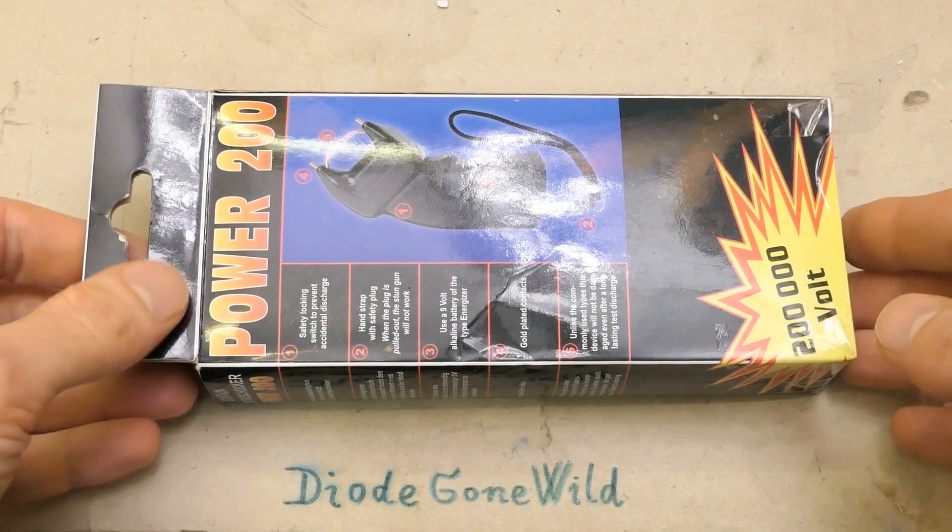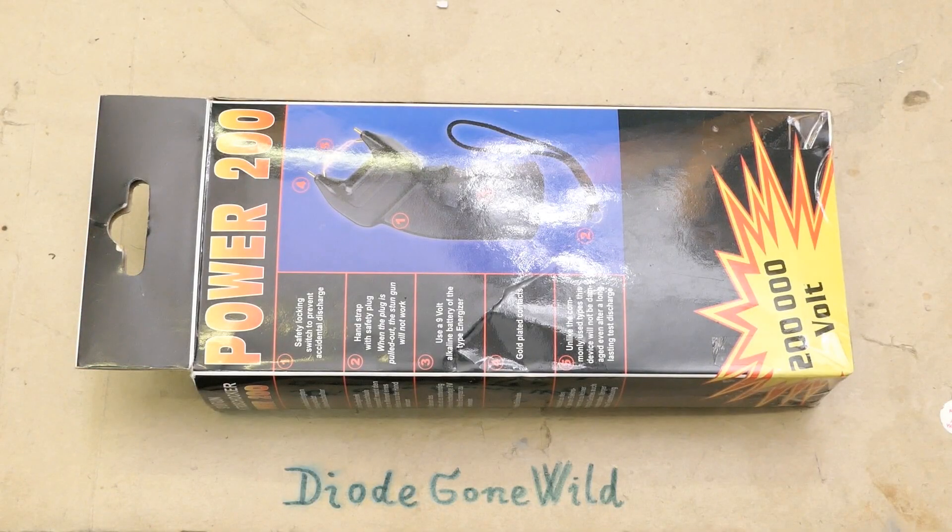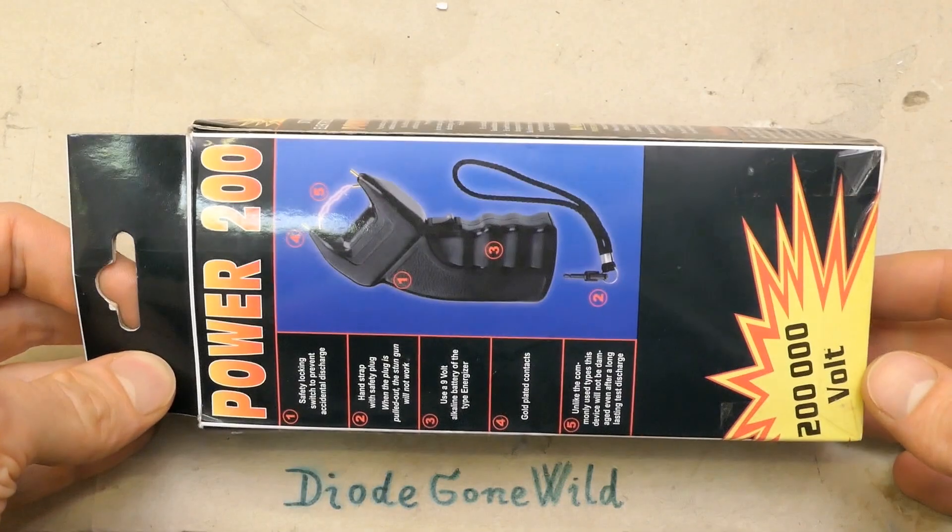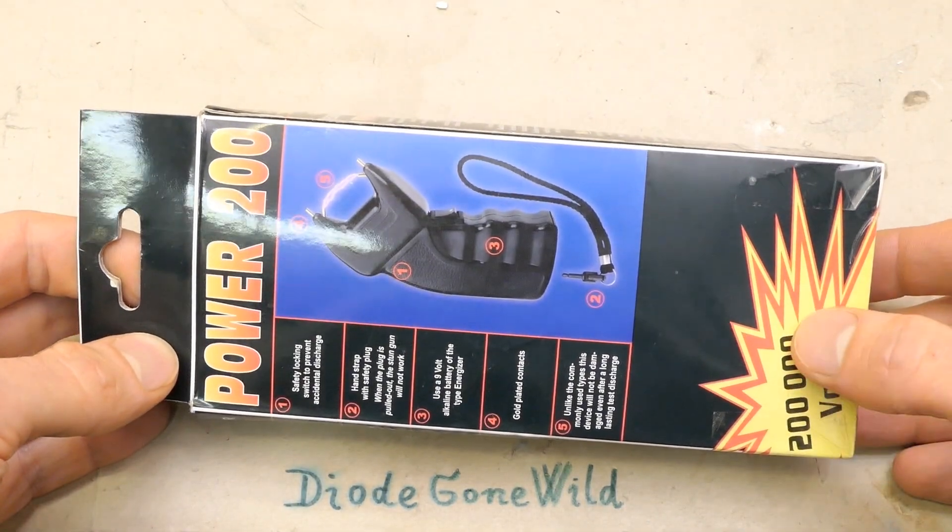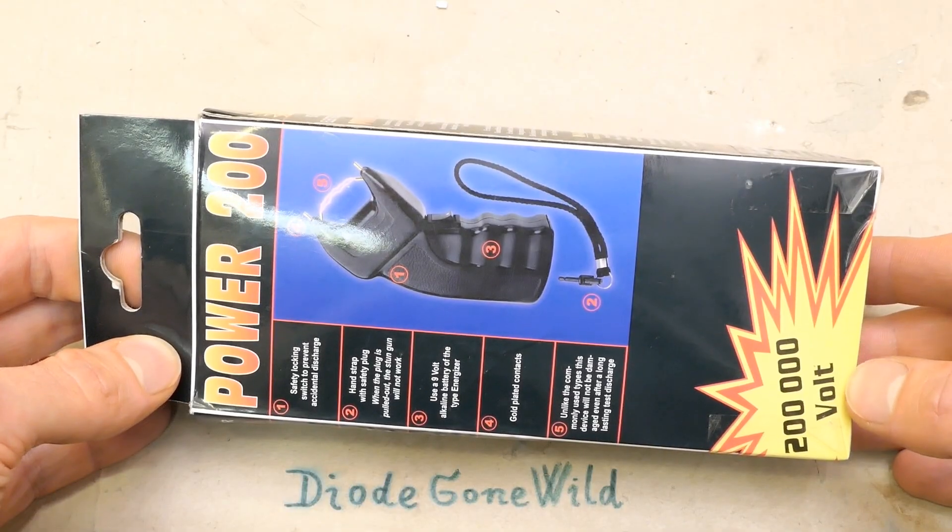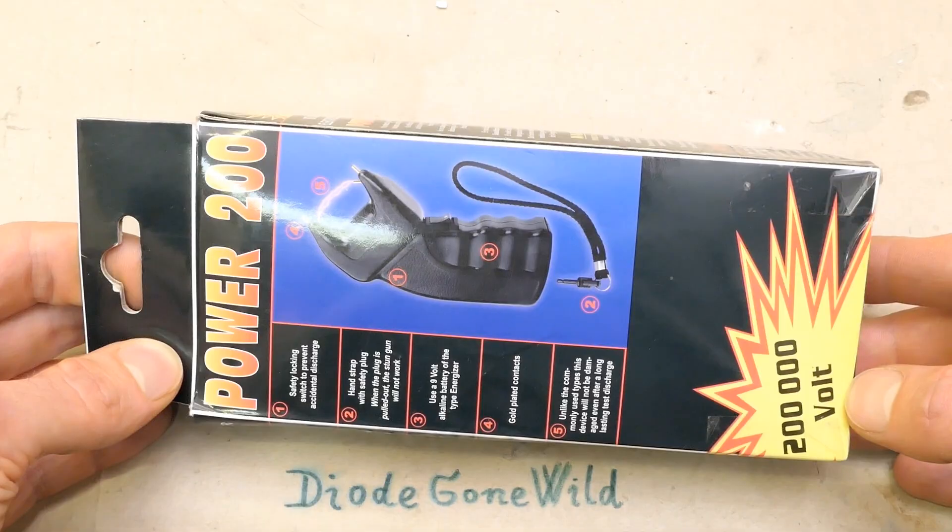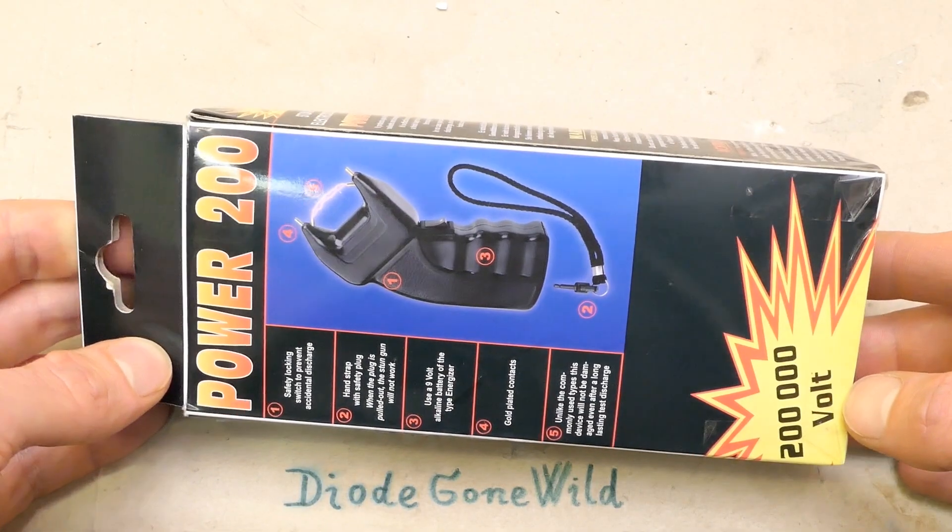So today let's see what's inside of this stun gun and how it works. It was donated by a viewer, so big thanks for the donation. It says 200,000 volts, but those voltage ratings on stun guns are always nonsense. This voltage would make a 20 centimeter discharge.